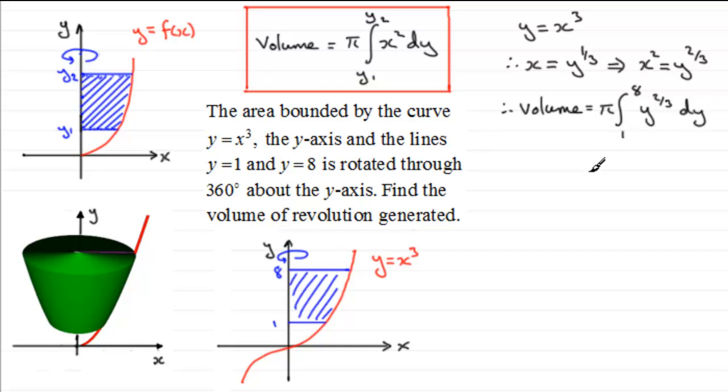And if we integrate this now in the usual way we've got pi and then we're going to add 1 to the power of y. Add 1 to the two-thirds gives us five-thirds so we have y to the power of five-thirds and then we divide by five-thirds which is exactly the same as multiplying by three-fifths. And that is going between the limits 1 and 8. I can take the three-fifths out now because it's a constant, three-fifths pi or three pi over five.